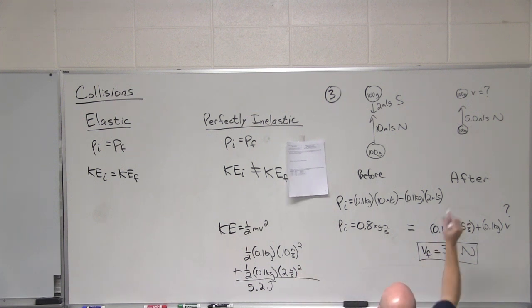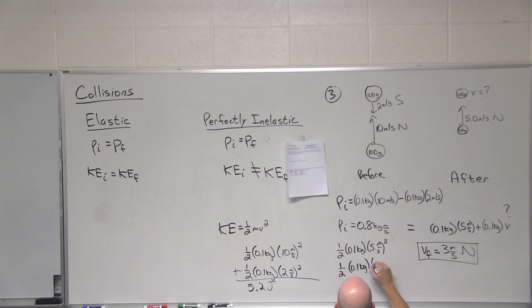And then after the collision here, now that we know the final velocity of the second one, one half times 0.1 kilograms. So first ball, 5 meters per second. Second ball, one half times 0.1 kilograms, and now 3 meters per second. And what's the total kinetic energy after the collision?